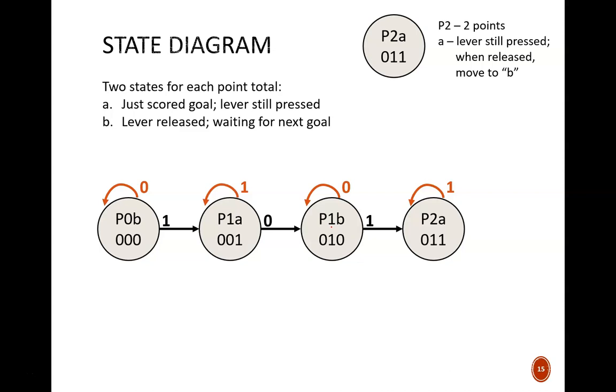Following these ideas allows us to continue the state diagram. Note that the state code follows a straight binary count. This is not required, but a sensible approach. Also note that the states labeled A are the intermediate states. They will not be held very long, because the lever won't be pressed for very long. The stable states that will be used most of the time are labeled B.